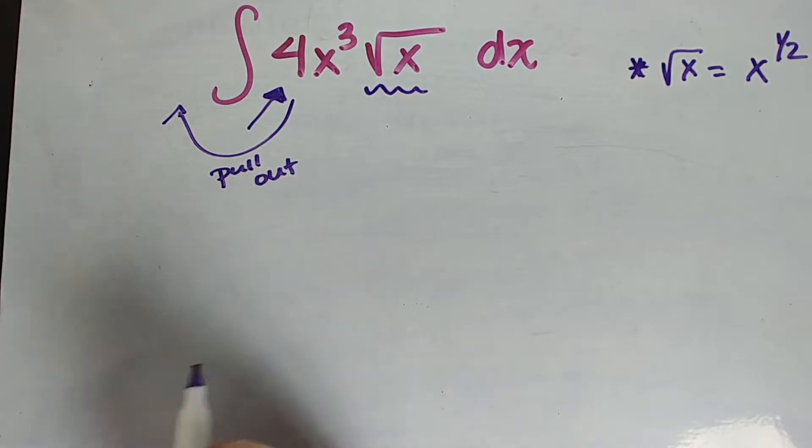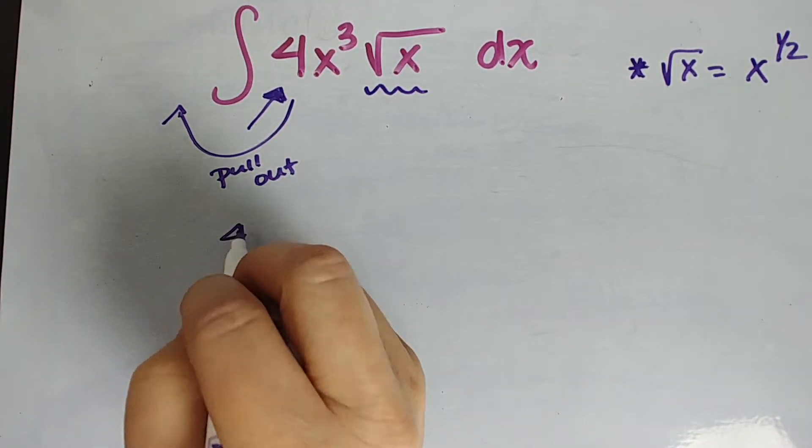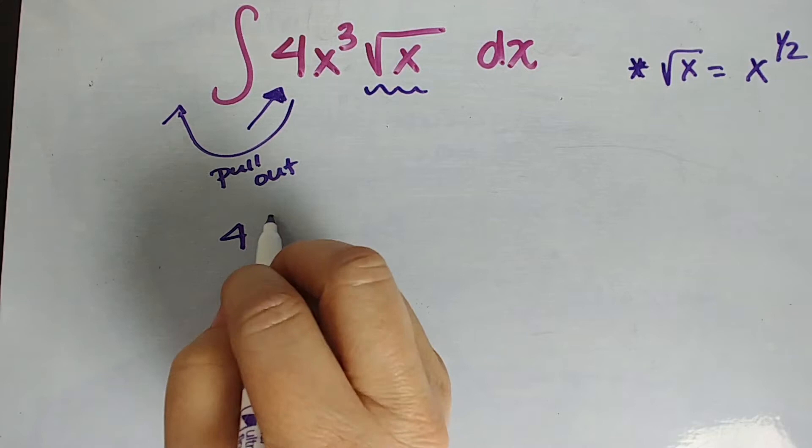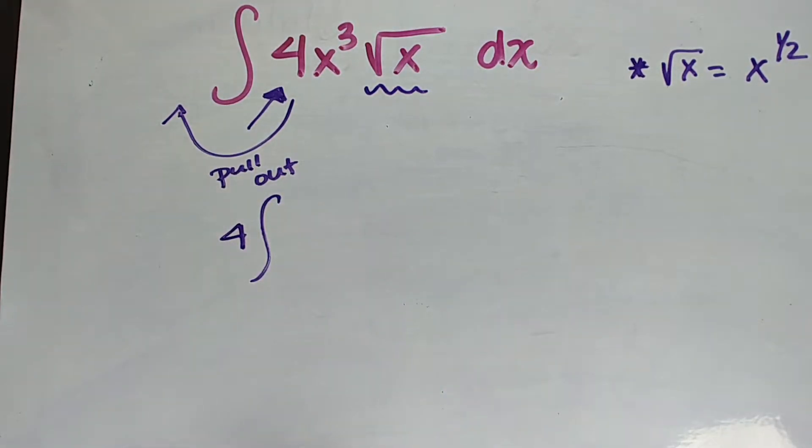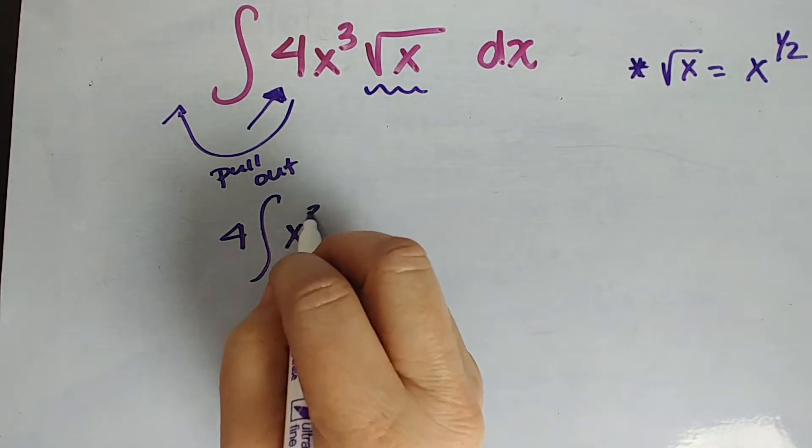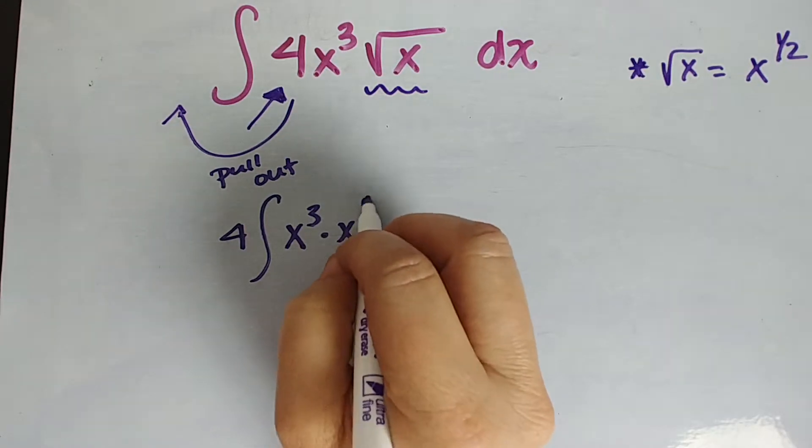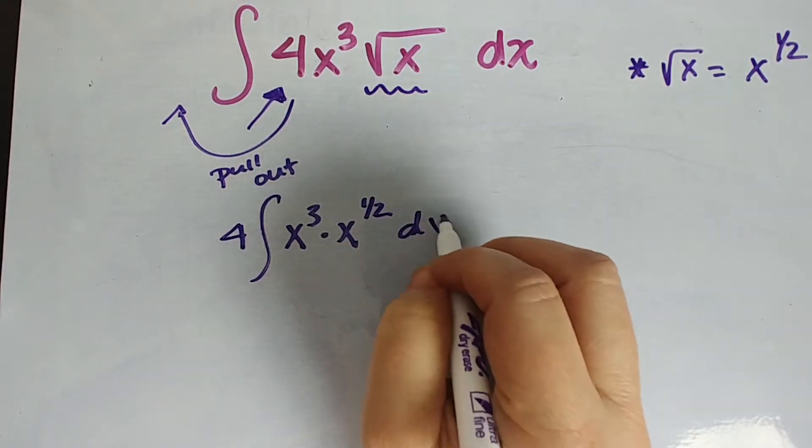So let's do some rewriting here. We are going to first take out our four, right? That's our constant multiplier. We'll worry about that later. And then we'll have left x cubed times x to the one half dx.